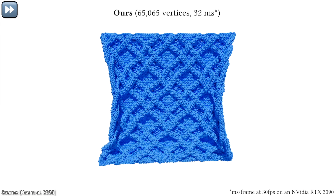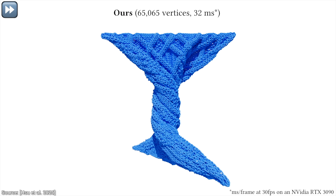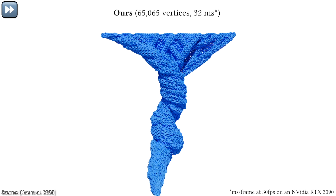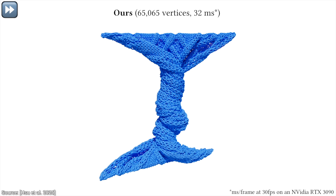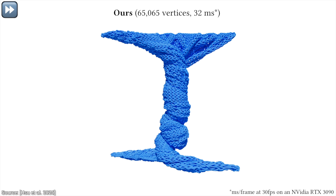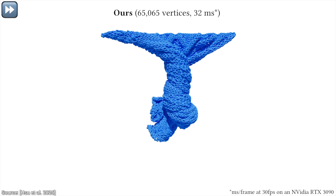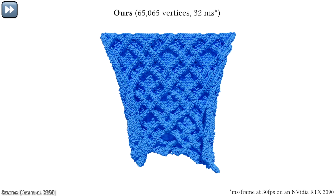Next up, a piece of cloth simulated not just as a textured sheet of paper — 65 thousand individual strands, moving naturally. And all this, in real time. This is insanity.